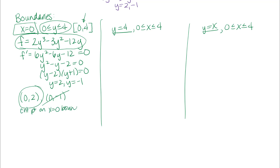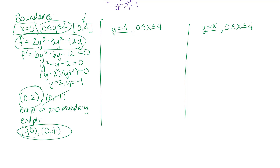From Calculus 1, beyond the interior critical points we also need to consider the endpoints of each boundary. Along x = 0 with y going from 0 to 4, the endpoints are (0, 0) and (0, 4). So from this boundary we have three points to consider: the critical point (0, 2) and the endpoints (0, 0) and (0, 4).